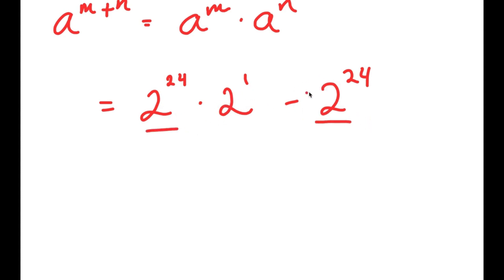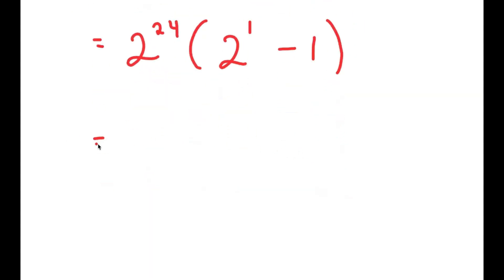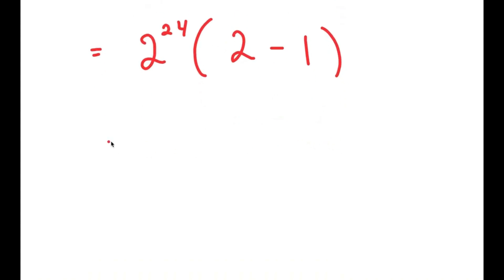Notice how both of these terms have 2 to the power of 24 in them. So I get 2 to the power of 24 times: 2 to the power of 1 divided by 2 to the power of 24 is just 2 to the power of 1, and negative 2 to the power of 24 divided by 2 to the power of 24 is just negative 1. So I get 2 to the power of 24 times 2 to the power of 1 minus 1, which is equal to 2 to the power of 24 times 2 minus 1.